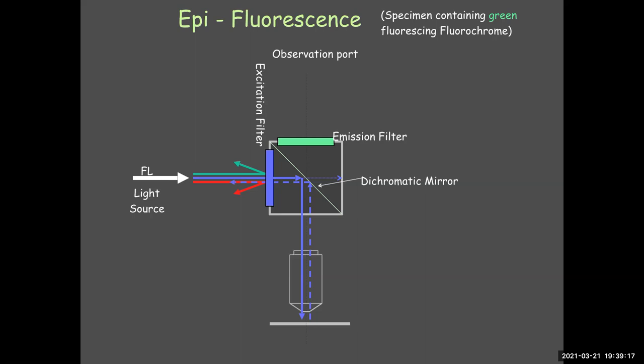You've let the blue light in — it's going to go where it wants to go. Some of that blue light might head toward the emission filter, but it will not pass through the barrier or emission filter. So the blue light is not making its way to our eyes or to the camera — we're not going to see it again. Now we look at what's happening with the specimen.